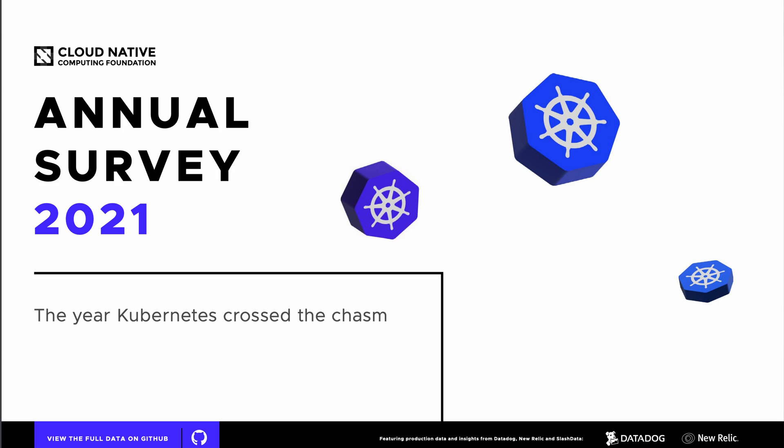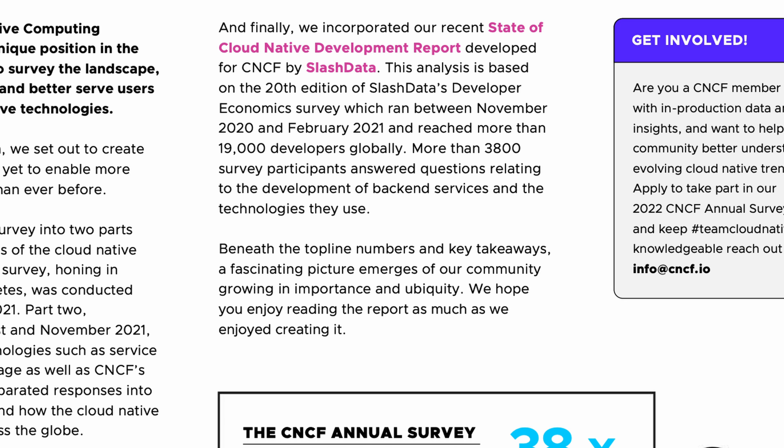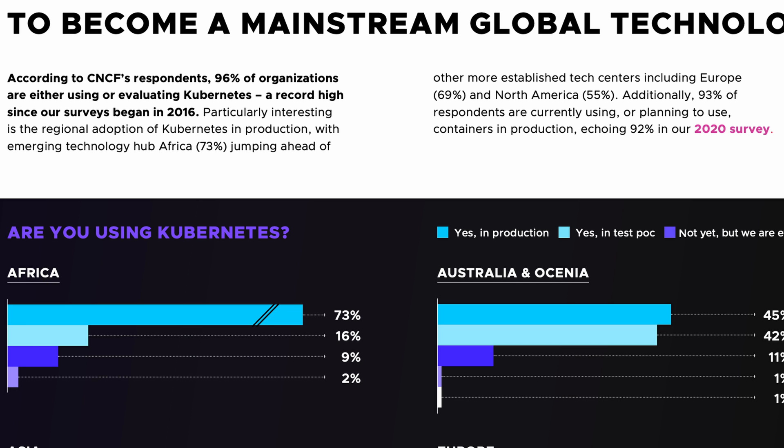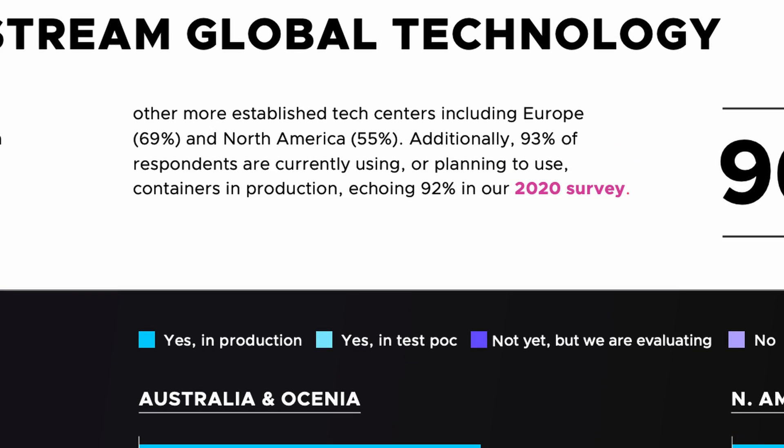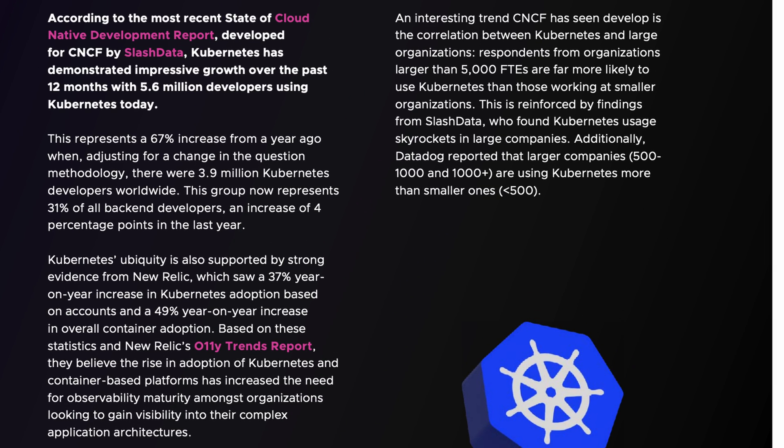The CNCF annual survey released in February 2022, with more than 3,800 participants from six continents, produced this: Number one, a record high of 96% of organizations are either using or evaluating Kubernetes — a major increase from 83% in 2020 and 78% in 2019. Number two, 93% of organizations are using or plan to use containers in production. And third, more than 5.6 million developers are thought to be using Kubernetes today. It's not going anywhere — it's a good time to learn it, but you'll need to know these foundations first.